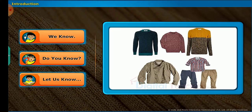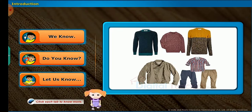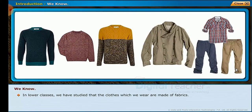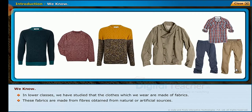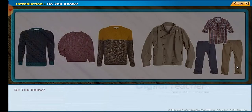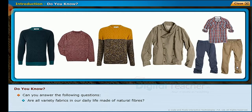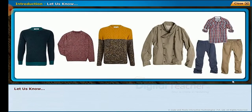Introduction: before entering into the chapter, follow the instructions shown on the screen and click each tab to know more. We know from lower classes that the clothes we wear are made of fabrics, and these fabrics are made from fibers obtained from natural or artificial sources. Are all variety of fabrics in our daily life made of natural fibers? Can you name some natural fibers? Let us find out the answers to such questions in this chapter.